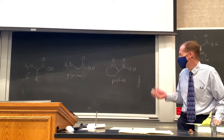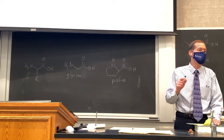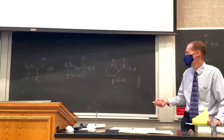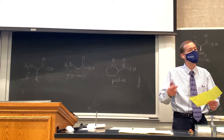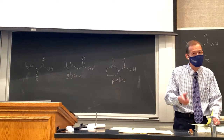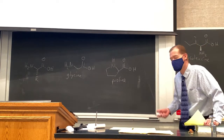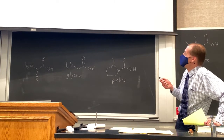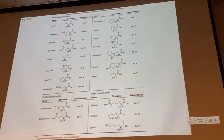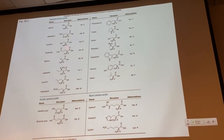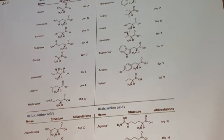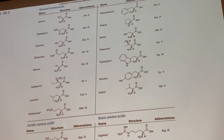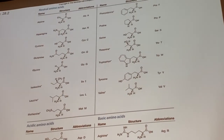For 18 of those 19, the configuration is S, and for one of those 19, it is R. How is that possible? It has to do with the Kahn-Ingold-Prelog priority system. If we look at cysteine, it has a sulfur in its side chain, which makes the side chain carbon a higher priority than the carboxylic acid carbon. So the priority switches and the R/S designation switches compared to the other amino acids, where the side chain is the third priority group.